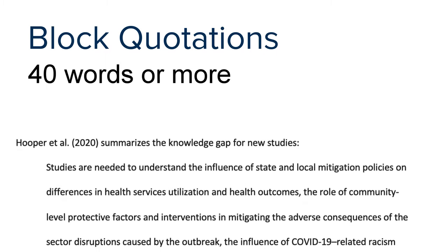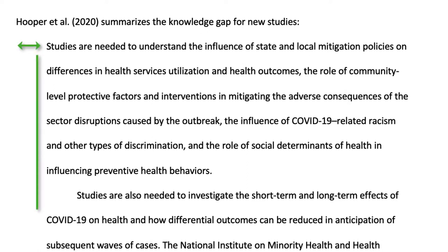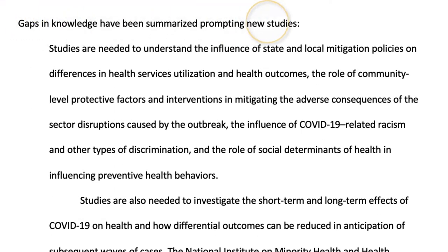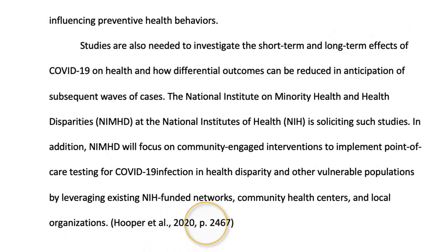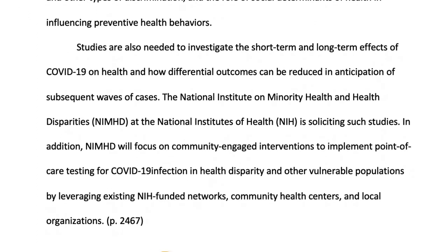Block quotations consist of 40 words or more for citing lengthier direct quotes, and you would use them only when necessary. Block quotes start on a new line, are indented half an inch, double-spaced, and do not require the use of quotation marks. New paragraphs in block quotes get an additional half-inch indentation. You can cite your source in parentheses after the quotation's final punctuation, or you can cite the author and year in the narrative before the quotation, and place only the page number in the parentheses after the quotation's final punctuation.